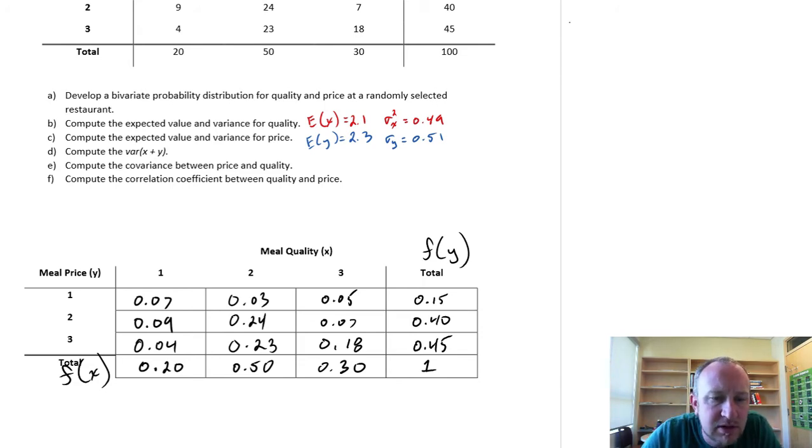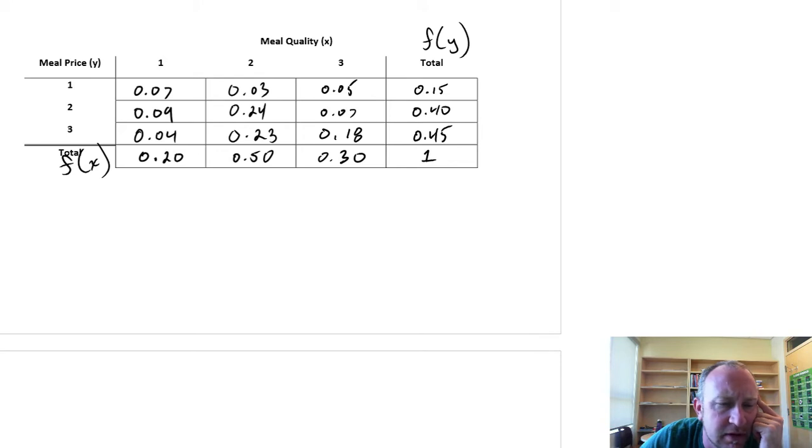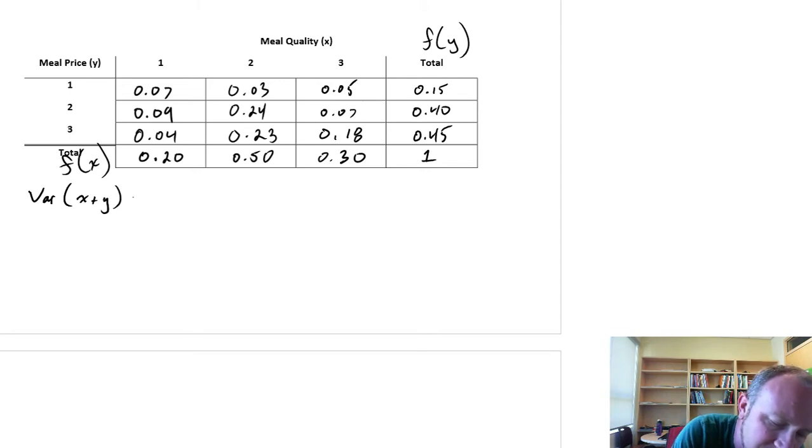So what we're going to do now, we're on to part D. We're going to compute the variance of x plus y. We're going to use a little bit of a trick for this. Instead of calculating variance x plus y, we're going to calculate the variance of s where s is equal to x plus y.